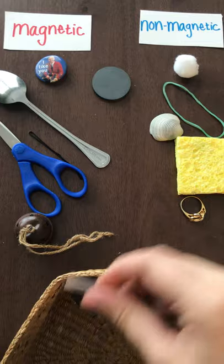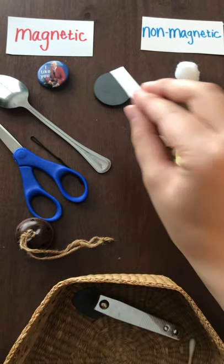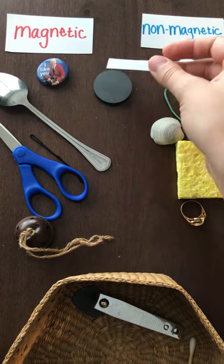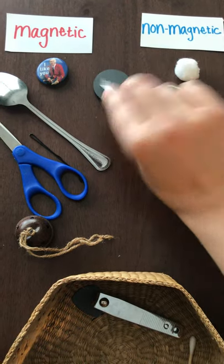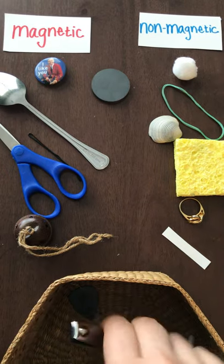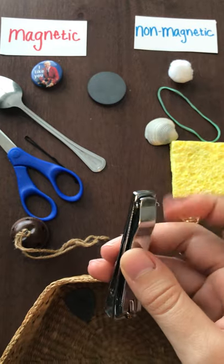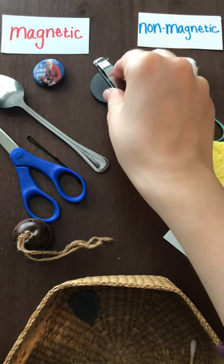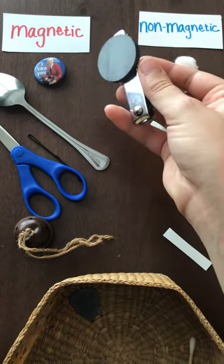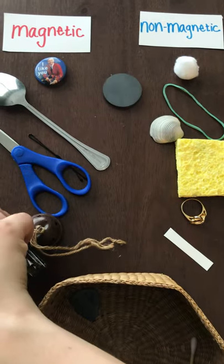I have a piece of paper. Do you think the paper is magnetic? It's non-magnetic. Let's do one more. Let's do our nail clippers. Do you think they're magnetic or non-magnetic? Let's see. It's magnetic! So we're gonna put it in our magnetic cup.